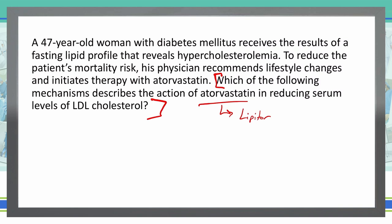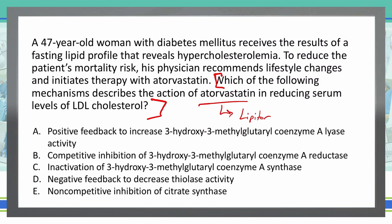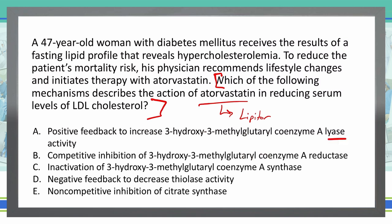Let's look at these answer choices. Answer A is positive feedback to increase 3-hydroxy-3-methylglutaryl coenzyme A lyase activity. That's our HMG-CoA, but we need to be careful — it says lyase, which might be trying to throw us off. I don't believe HMG-CoA is a lyase, so this is probably not the correct type of activity.